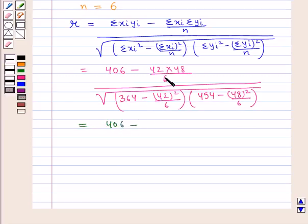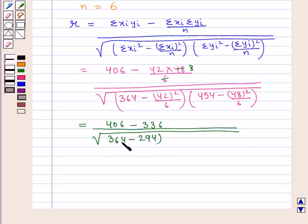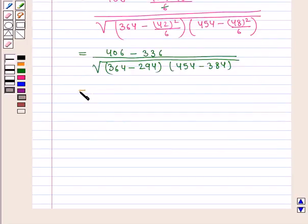which is equal to 406 minus 336 upon square root of 364 minus 294 into 454 minus 384, which is equal to 70 upon square root of 70 into 70, that is equal to 70 by 70 which is equal to 1.